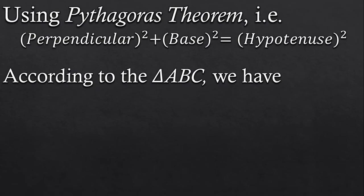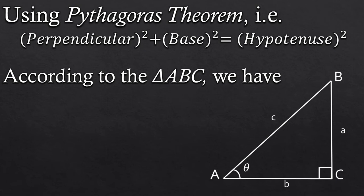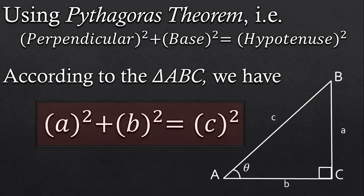So by using Pythagoras theorem which states that sum of squares of perpendicular and base of a right angle triangle is equal to the square of its hypotenuse. So as per our triangle ABC, we have a square plus b square is equal to c square.